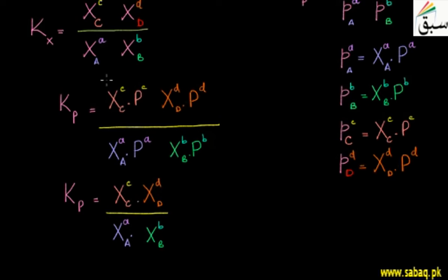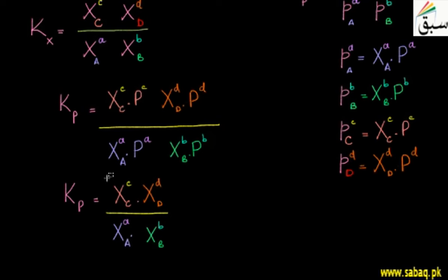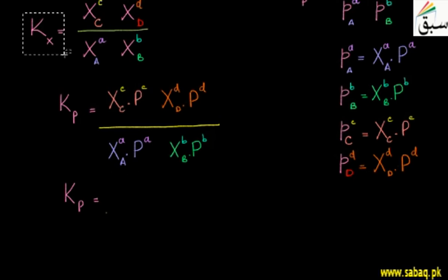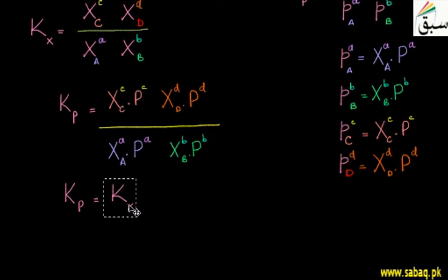Now we observe that the part consisting of mole fractions — Xc^c · Xd^d in the numerator over Xa^a · Xb^b in the denominator — is exactly equal to Kx. So this part is replaced by Kx.